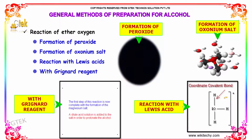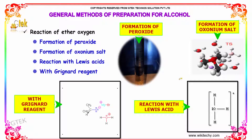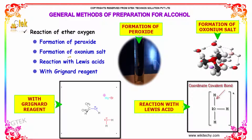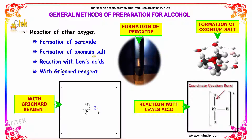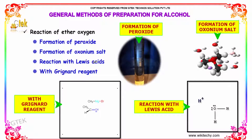General methods of preparation for alcohol. Reaction of ether oxygen. This is done by the formation of peroxide, formation of oxenium salt, reaction with Lewis acids and with Grignard reagents.